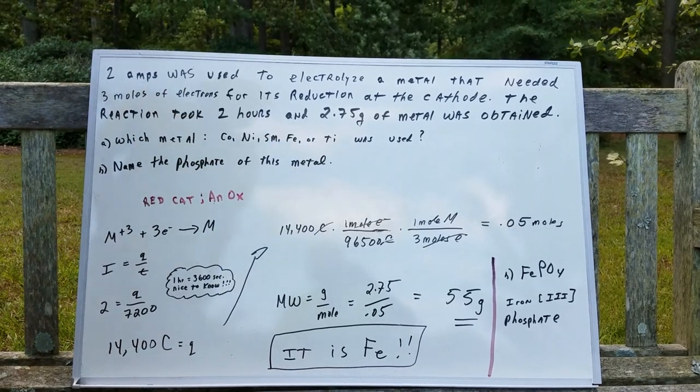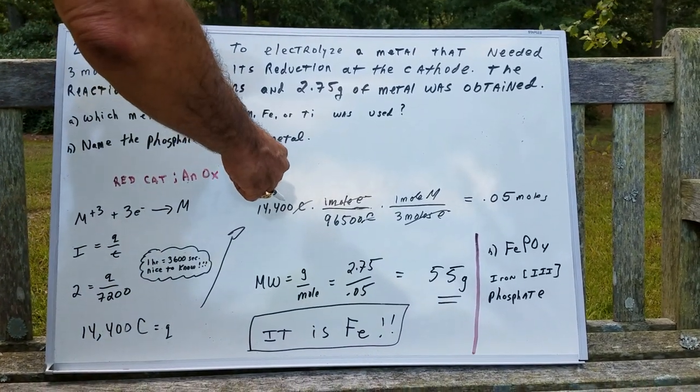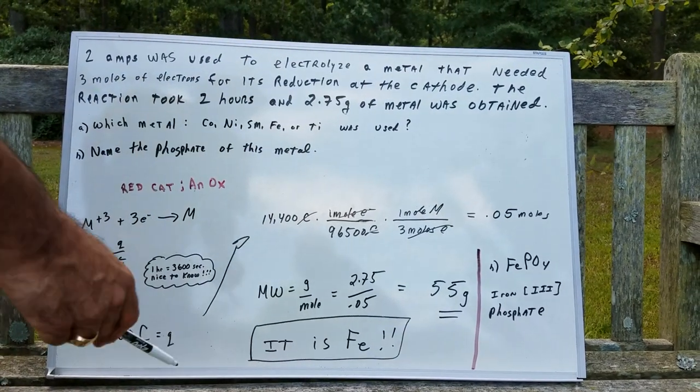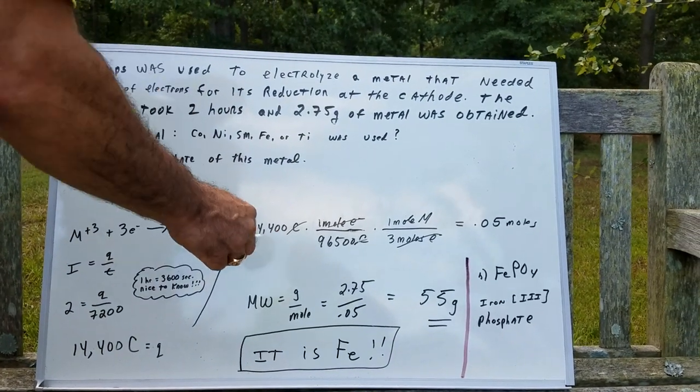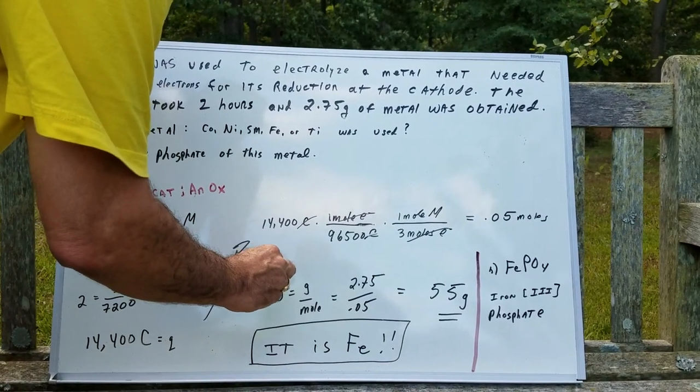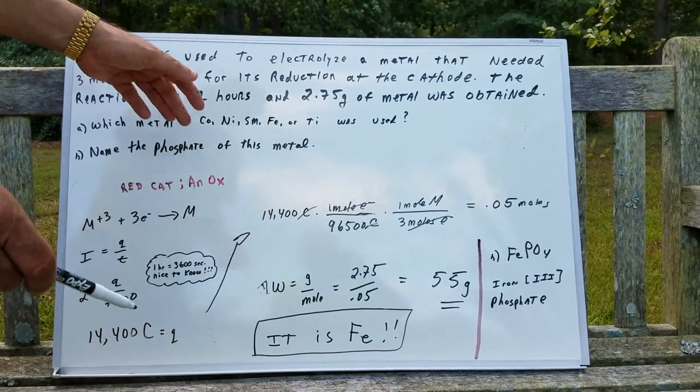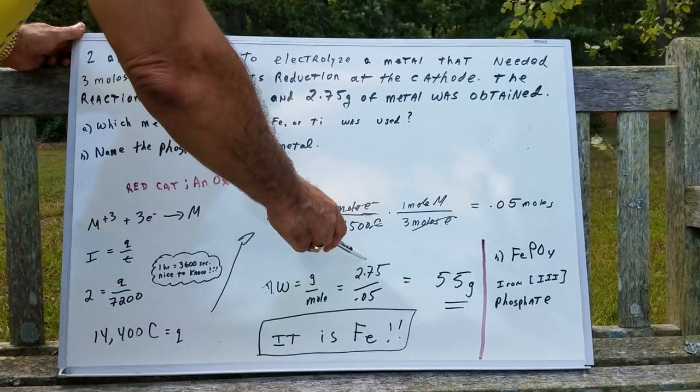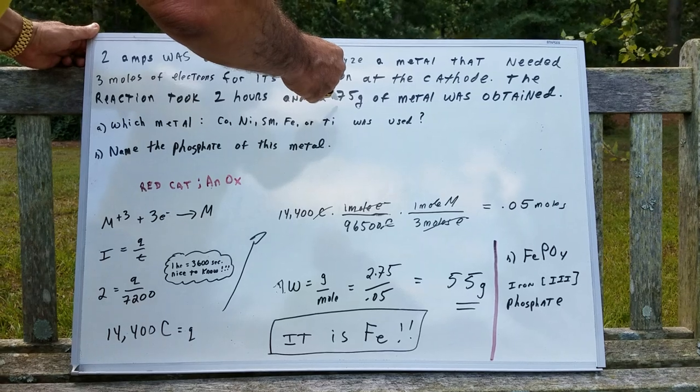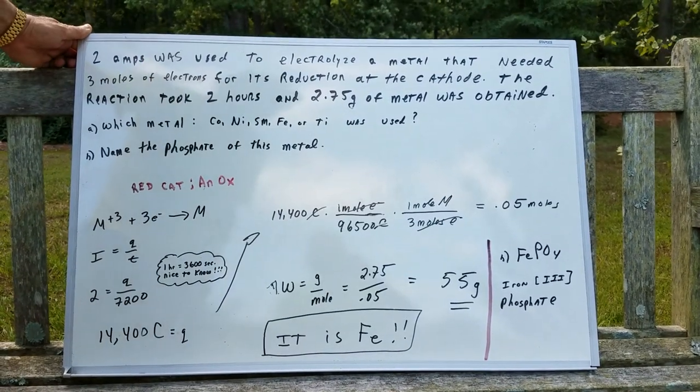The numbers are not so nice here. I did it with a calculator. The DAT will be much nicer. But when you divide this out, you get 0.05 moles. The molecular weight, or here, it's actually not the molecular weight, but the atomic weight. The atomic weight of the metal is the grams over the moles. The grams of metal was 2.75. The moles was 0.05.